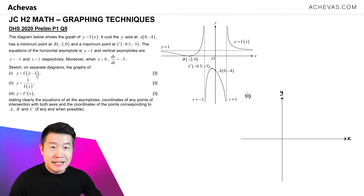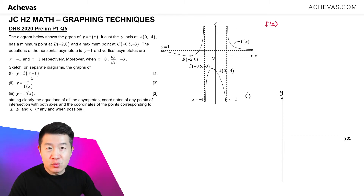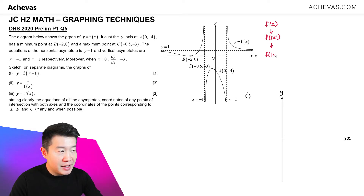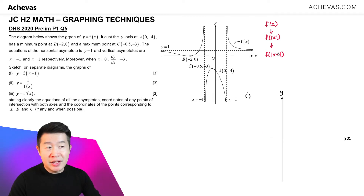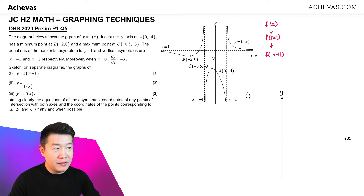In order to sketch this graph, we need to determine the sequence of transformations, because f(x) is going to be translated via two transformations. The first thing I'm going to do is to replace x by modulus of x, and then replace x by x minus 1, which gives me what the question asks me to sketch. So the sequence is: first, replace x by modulus of x.